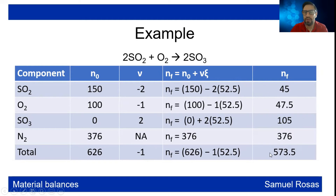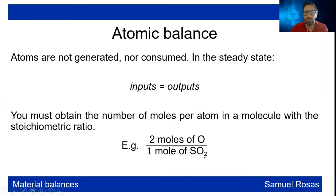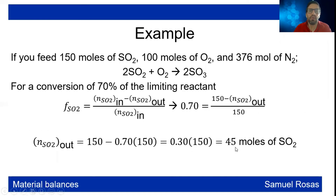Adding these up yields 573.5, which is consistent with the total balance: 626 + (−1 × 52.5) = 573.5. For the atomic balance, atoms are neither generated nor consumed, so in steady state inputs equal outputs. Whatever enters as an atom must exit in some form. You obtain the number of moles per atom in a molecule using the stoichiometric ratio — for instance, each mole of SO2 has two moles of O and one mole of S.